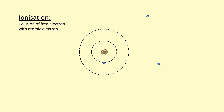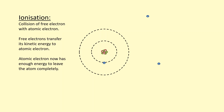Ionization has occurred because a free electron collided with the atomic electron, transferring kinetic energy to the atomic electron, and that was enough energy for the atomic electron to leave the atom completely. What's left over is a charged atom — in other words, an ion. That's why this process is called ionization. The ion that's left over is a positive ion because it's missing an electron, which is negative.